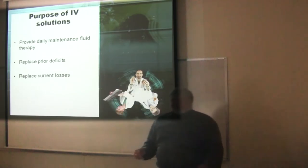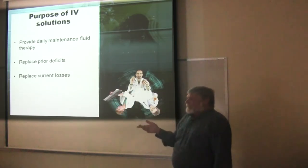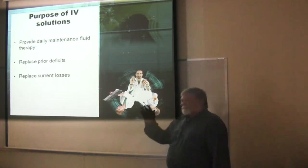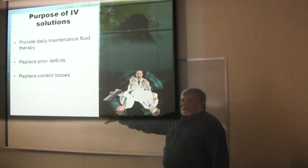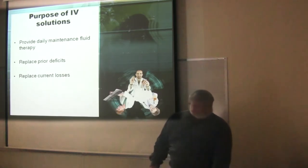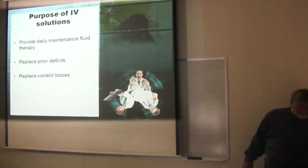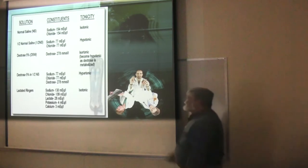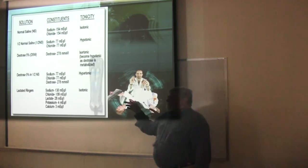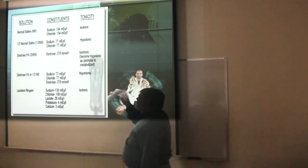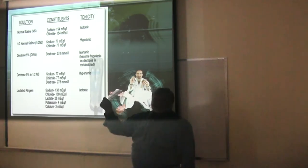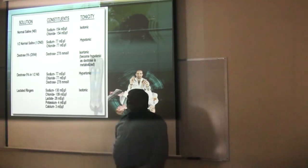We talked about the special case of dextrose — once it gets into the bloodstream it gets metabolized and consumed, so it does change in the bloodstream. Otherwise you'll hear in the hospital: NS, LR, half NS, D5 — they don't call it lactated Ringer's, just LR. And there's the banana bag — basically electrolyte replacement for an alcoholic along with vitamins.